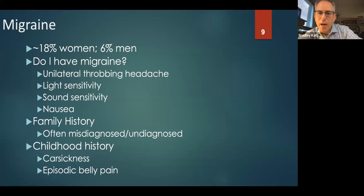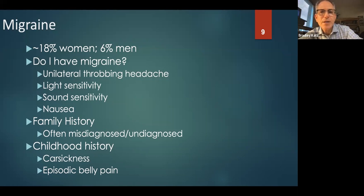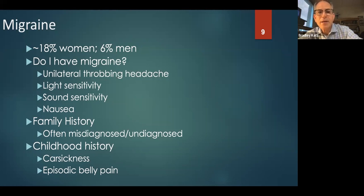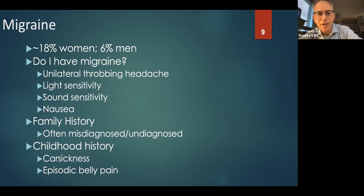Migraine is incredibly common — almost 20% of women. If five women walk into your general clinic, on average one is going to have migraine. Six percent of men. Headaches are usually characterized by unilateral throbbing pain, light sensitivity, sound sensitivity, and nausea, but not always. There's often a family history but you have to really go digging for it. Many people are often misdiagnosed or completely undiagnosed.